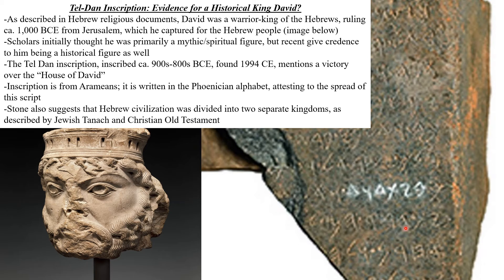The inscription is from the Arameans, and it's also written in the Phoenician alphabet, which is interesting, showing how the Phoenician script had spread throughout the region because of its utility. The stone also suggests the Hebrew civilization was divided into two separate kingdoms, which is also noted by the Jewish Tanakh and the Christian Old Testament. This is a monumental find, as it shed new light on the religious figure of King David.